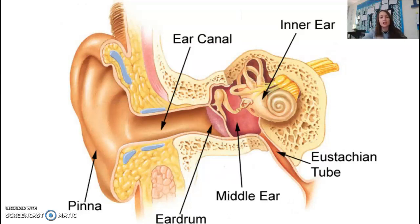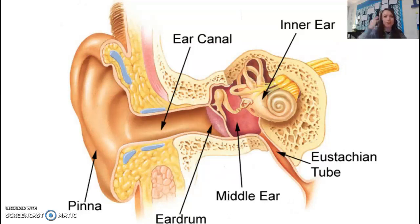Amplitude is how loud something is. That's easy to remember by thinking of an amp — an amplifier that you use with microphones or in a band to make sound louder. An amplifier increases amplitude, so if you think of amp, it makes things louder. Amplitude equals loudness.